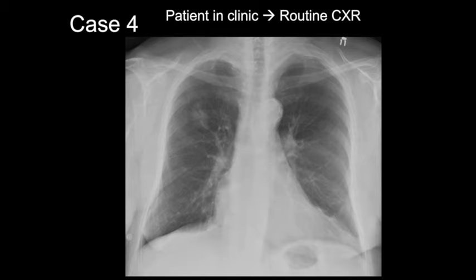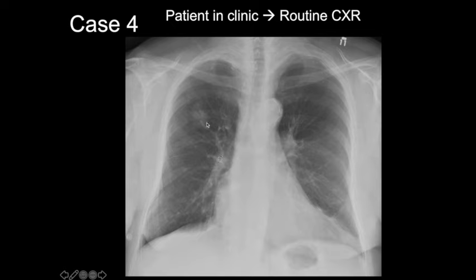Next case. Going through our approach — heart, mediastinum, comparing both lungs, zigzagging up both lungs for subtle findings. No pleural effusion or pneumothorax. Soft tissues, bones, and abdomen are okay. Checkpoints: maybe some scarring in the apices, hyla okay, nothing behind the heart or diaphragms. You probably noticed this nodular abnormality in the right upper lung. This contrasts with our previous cases of consolidation, interstitial edema, and pulmonary fibrosis — now we're showing a pulmonary nodule.